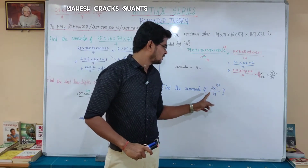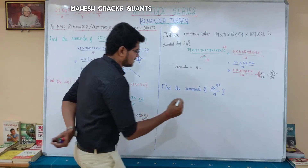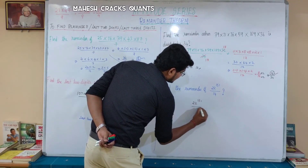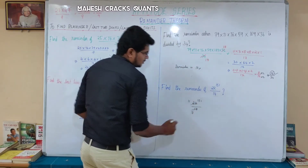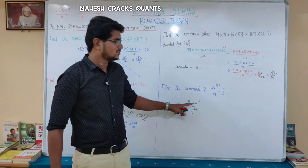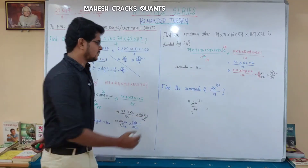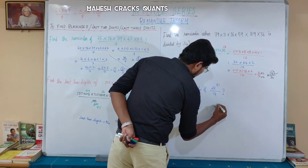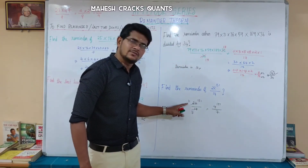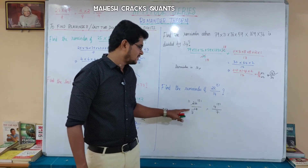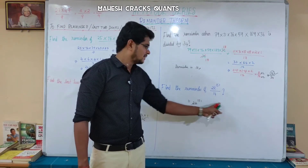The next question: find the remainder of 22 power 151 divided by 14. First step — cancel common factors: 22 divided by 14 gives 11 by 7. So 7 times 2 is 14, 11 times 2 is 22. Next, find the remainder of 11 divided by 7 — which is 4. So we need 4 power 151 divided by 7.